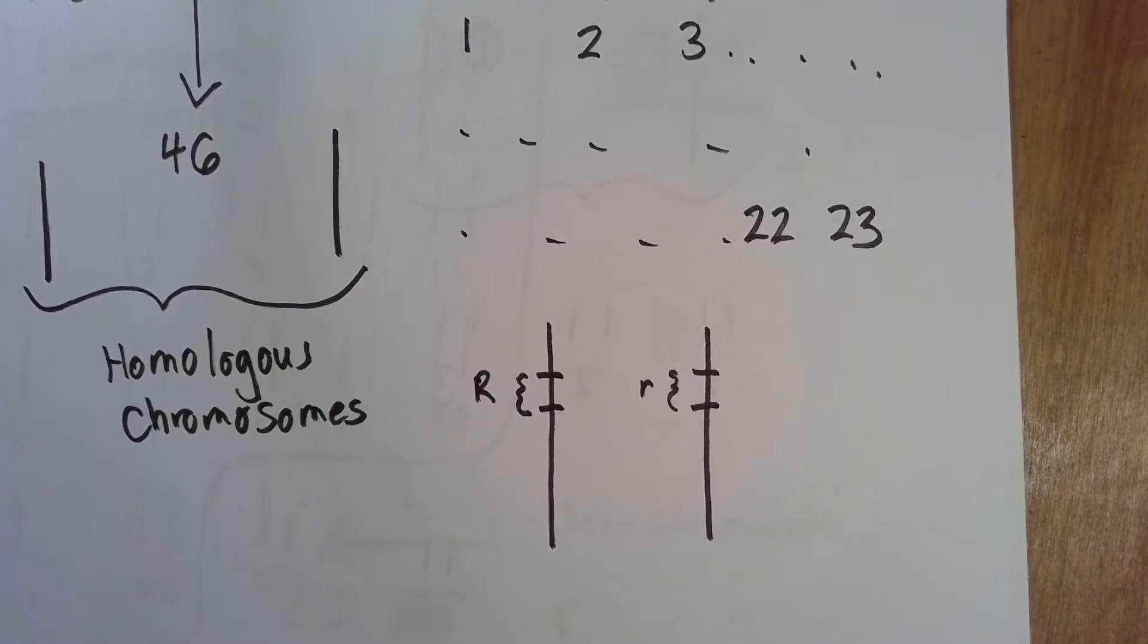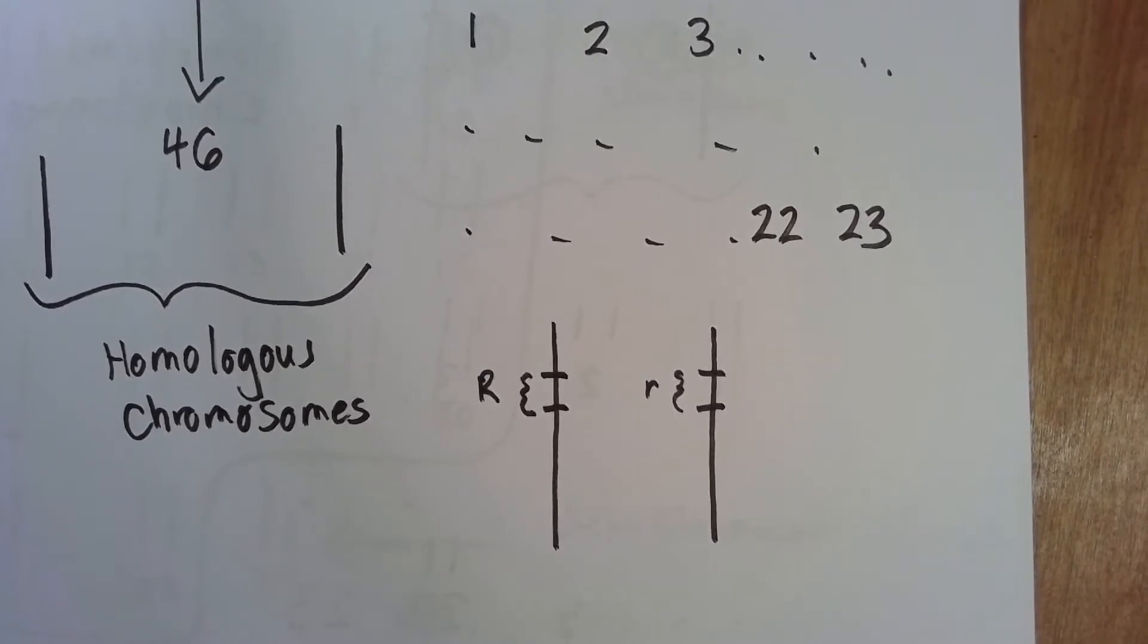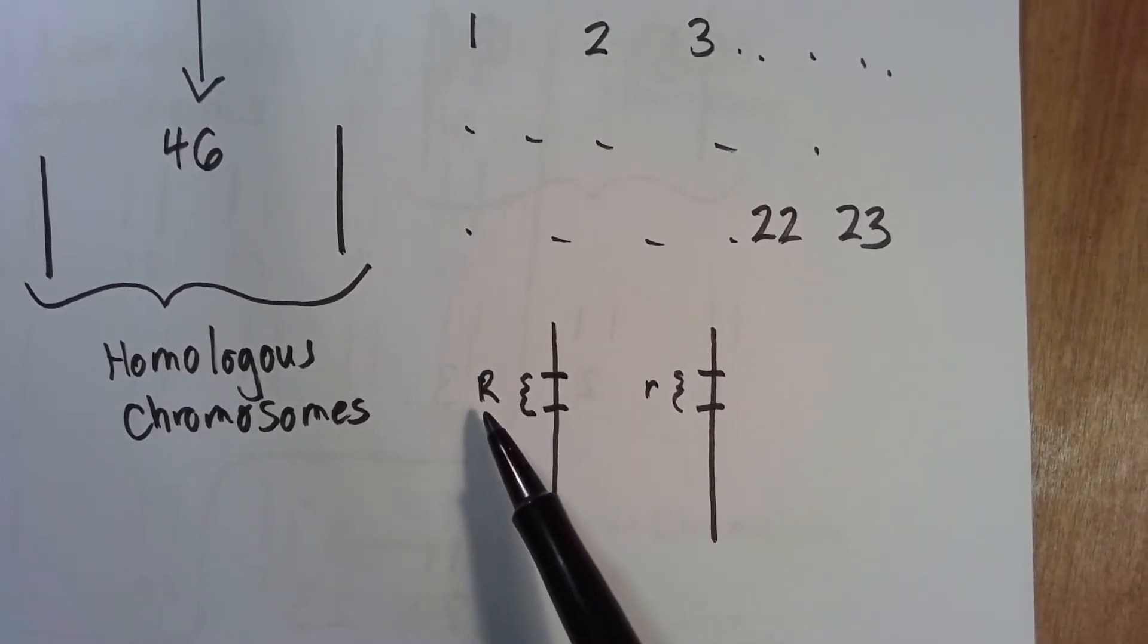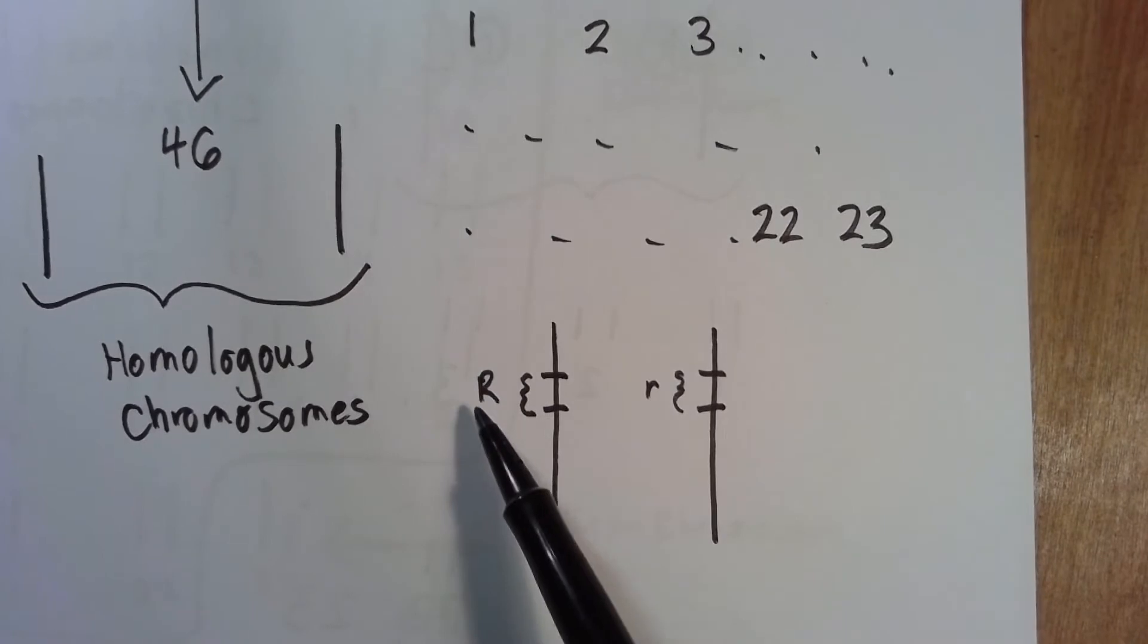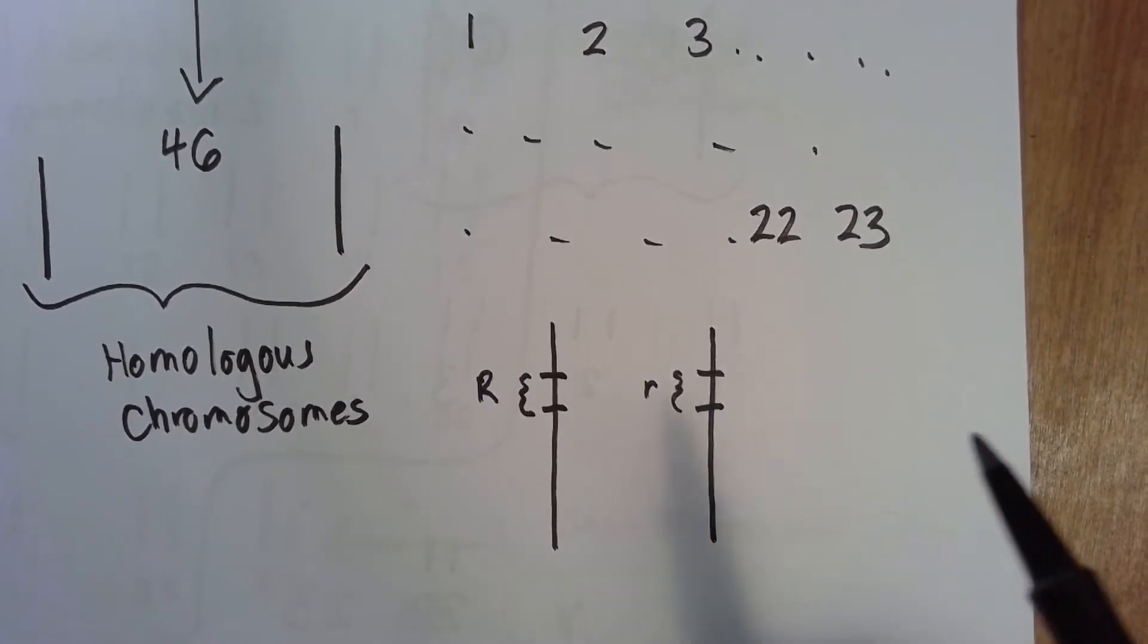For example, your hair color can be brown, blonde, black. Those are different alleles of the same gene. Your eye color. Now, sometimes in humans, you have multiple genes that will code for one trait. But to keep it simple, let's just pretend the entire trait was described by this one stretch of DNA.